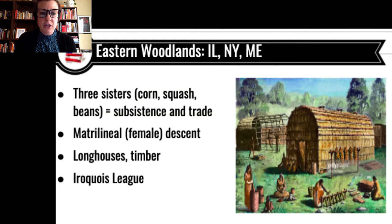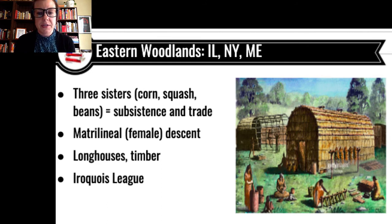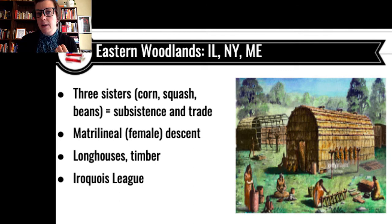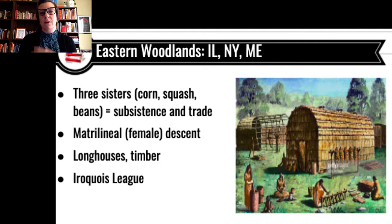The next region is the Eastern Woodlands — a large region including the Midwest and spreading all the way to the East Coast. This is primarily a farming-based group of societies. The three really important crops grown here are often referred to as the three sisters of the Native American diet: corn, squash, and beans. These crops support each other — it is easier to grow all three together than any one of them independently. These crops were grown for subsistence, to feed yourself and your family, and also for trade.